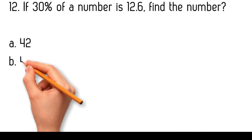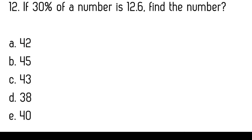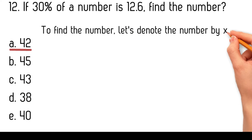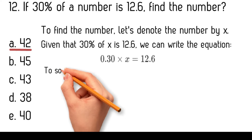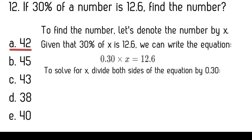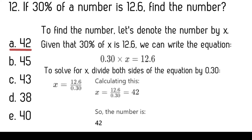If thirty percent of a number is twelve-point-six, find the number. Options: forty-two, forty-five, forty-three, thirty-eight, forty. To find the number, let X be the number. Given that thirty percent of X is twelve-point-six, we write 0.30 times X equals 12.60. Dividing both sides by 0.30, X equals twelve-point-six divided by zero-point-three, which equals forty-two.